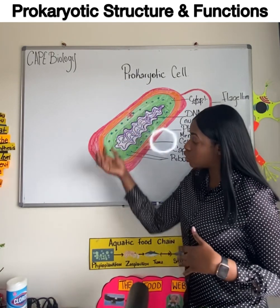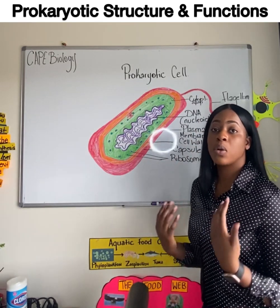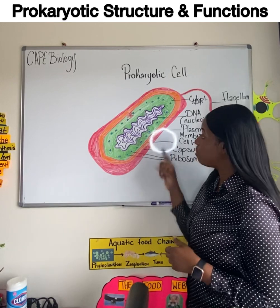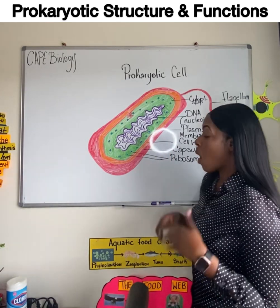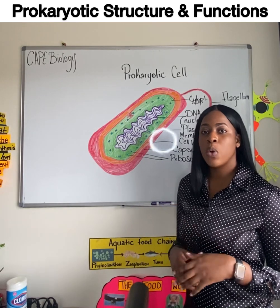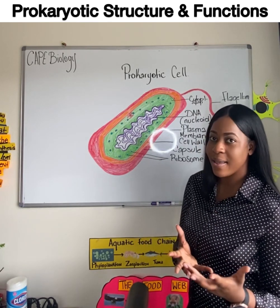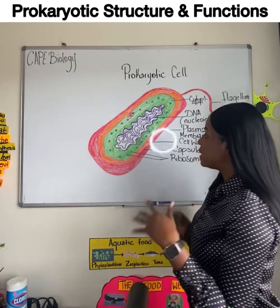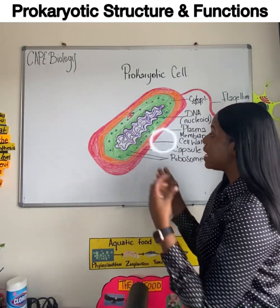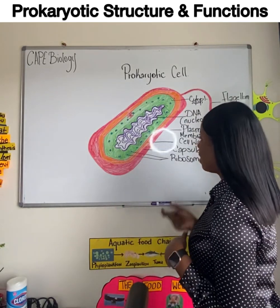The cell wall also enables the cell to withstand osmotic pressures. Similarly to both animal and plant cells, there is a cell membrane or plasma membrane in prokaryotic cells, also composed of a bilayer, but it lacks many of those important molecules that make up the bilayer in eukaryotes. The cell membrane here is also selectively permeable and it selects for or against molecules coming into the cell.